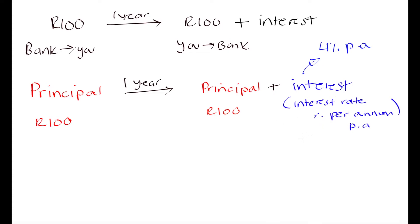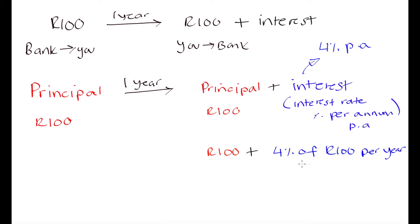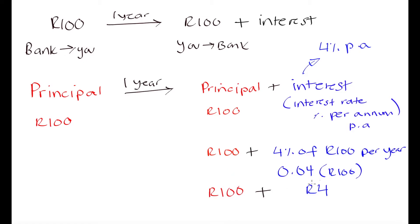What does four percent per annum mean? At the end of the one year, you are going to pay back the 100 Rand plus four percent of 100 Rand per year. Since we agreed to keep the money for only one year, that is simply four percent. Four percent of 100 Rand can be calculated as 0.04 × 100, which equals 4 Rand. So you pay back 100 Rand principal plus 4 Rand interest.